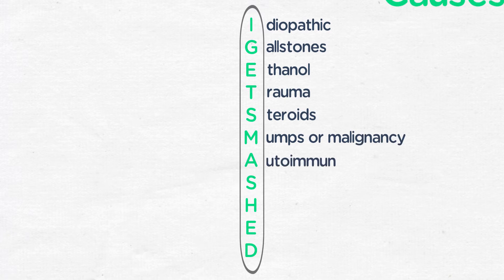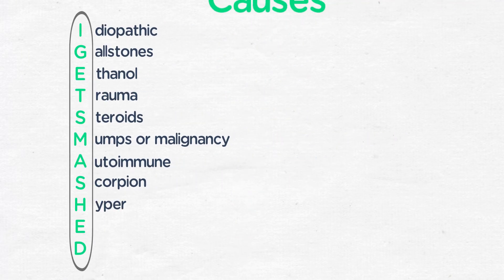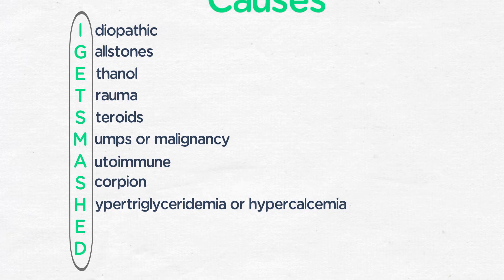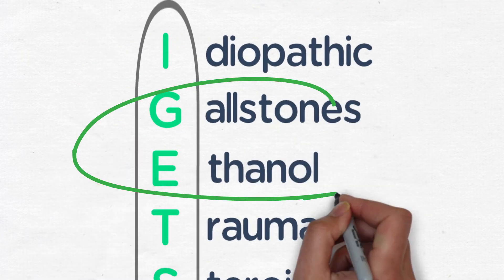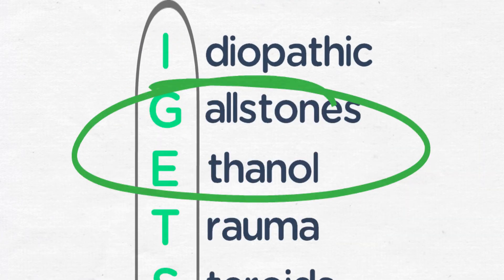A is for an autoimmune process, S is for scorpion sting, H is for either hypertriglyceridemia or hypercalcemia, E is for ERCP, and D is for drugs or certain medications. The most common causes of acute pancreatitis are gallstones and ethanol.